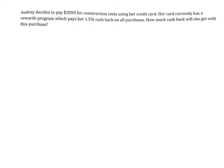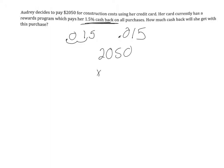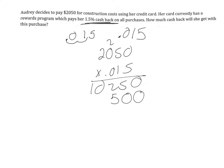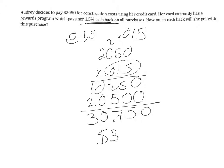Audrey decides to pay $2,050 for construction costs using her credit card. Her card has a rewards program of 1.5% cash back. How much cash back will she get? We change 1.5% to a decimal: 0.015, then multiply by $2,050. Working through the multiplication with three decimal places, she will get $30.75 back from her rewards program.